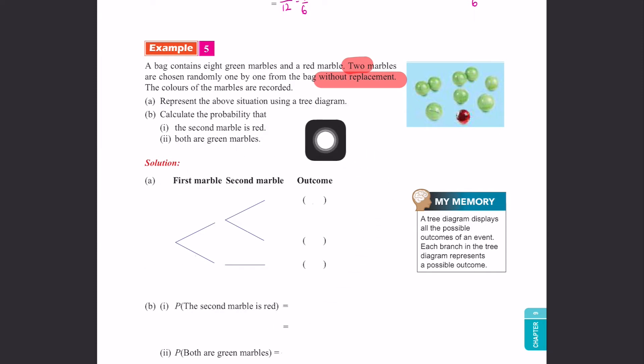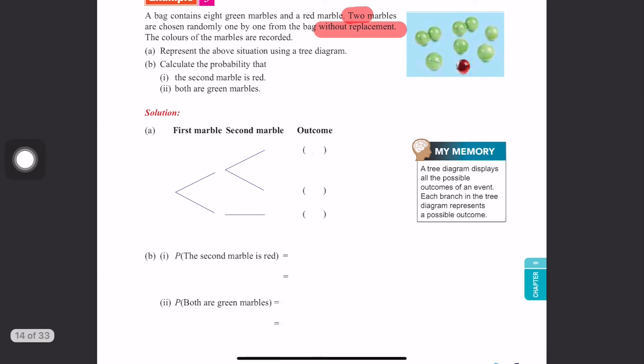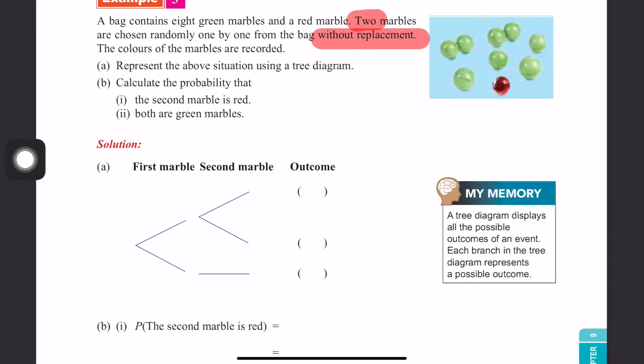Part A: represent the situation using a tree diagram. And then calculate the probability that the second marble is red, and that both are green marbles. Let's check. We make our tree diagram. We have first marble and second marble.